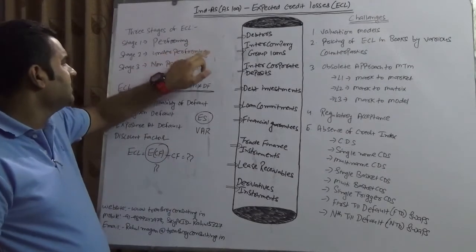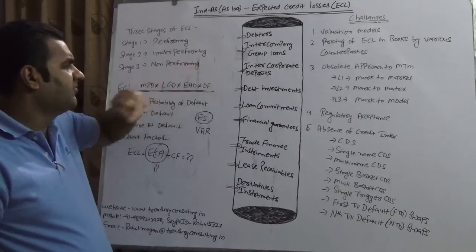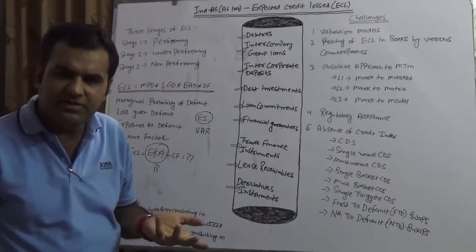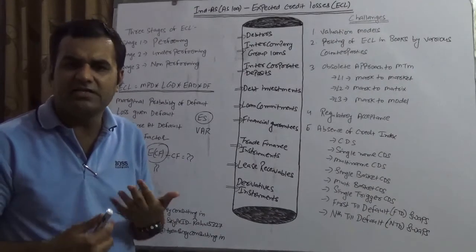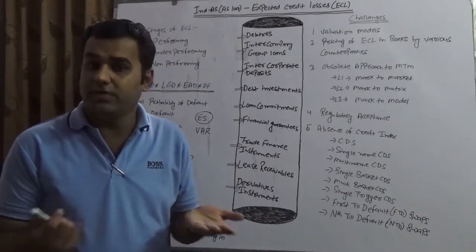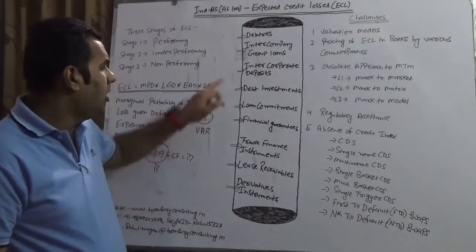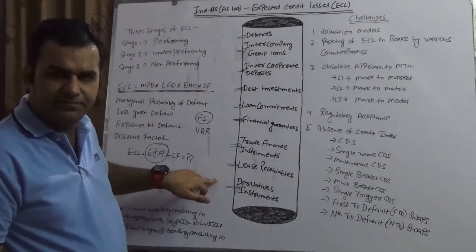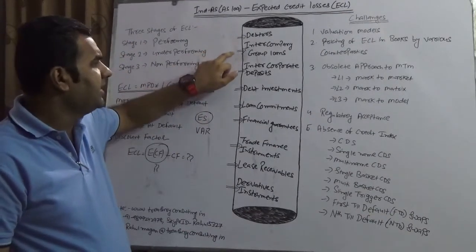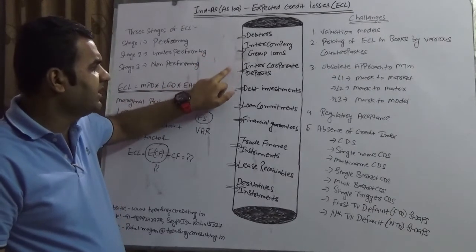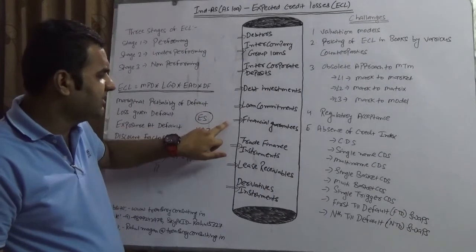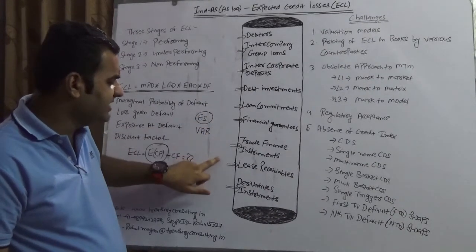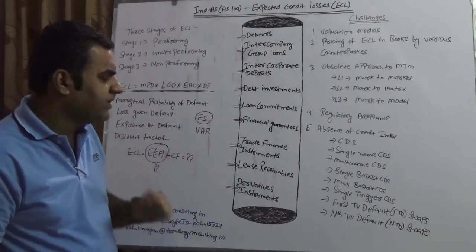ECL is saying the valuation has to be done in three phases: performing stage, underperforming stage, and non-performing stage. What is performing stage? Performing stage is when the underlying is healthy and there is no reason to worry. According to law, these would be the underlying: debtors, intercompany group loans, intercompany deposits, debt investments, loan commitments, financial guarantees, trade finance, lease receivables, and derivative instruments.